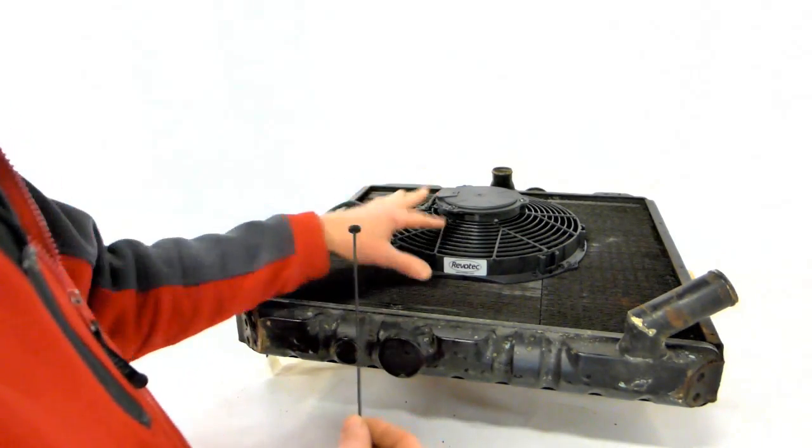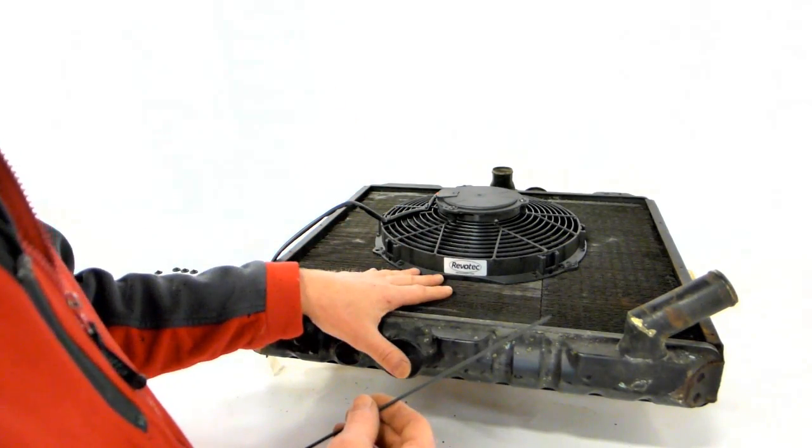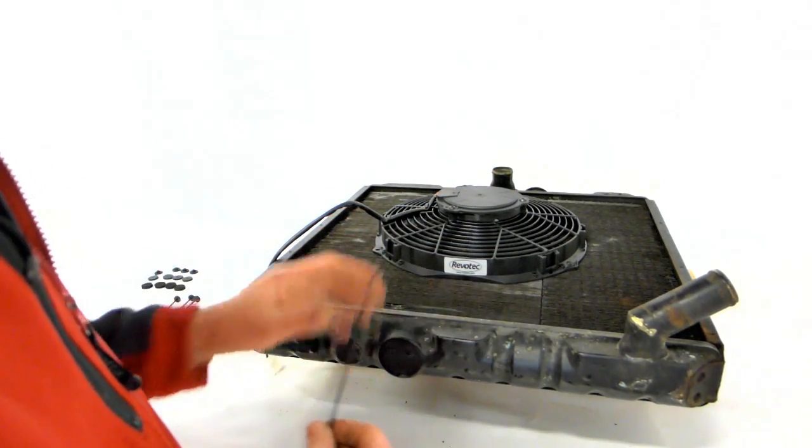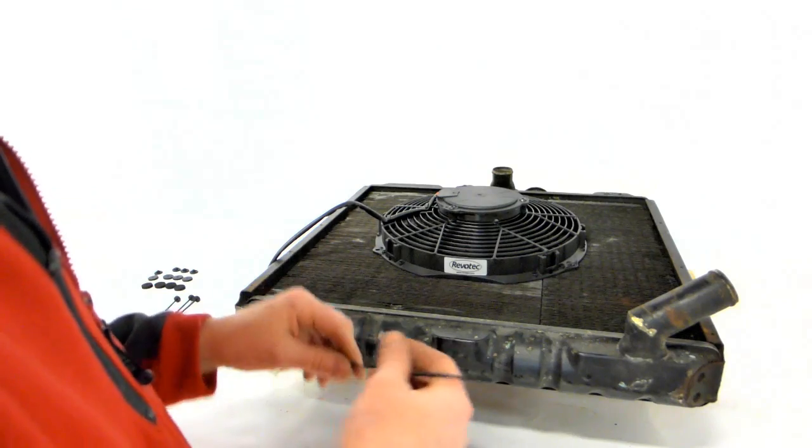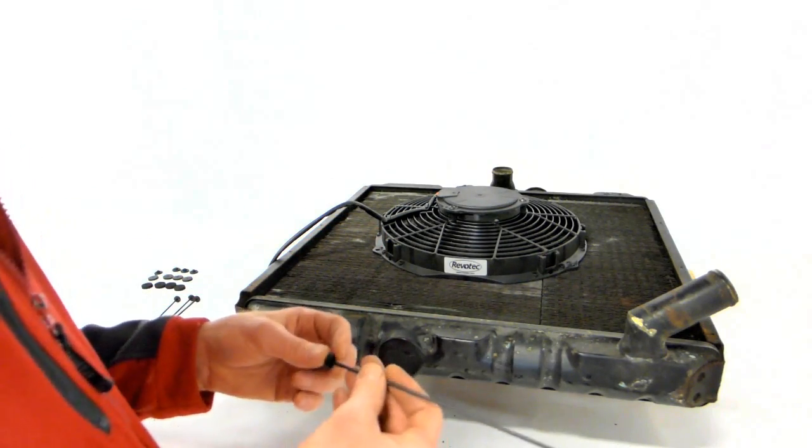Once you start getting above 12-inch size fans, the weight of them could be detrimental to your radiator core. You don't want that weight pulling on the radiator core, so we don't recommend them above 12 inches. We suggest you use one of our universal bracket kits perhaps.